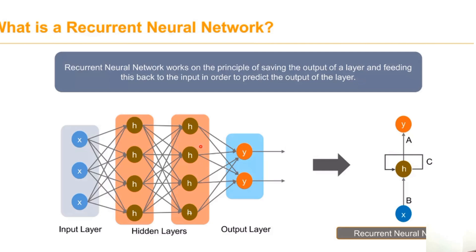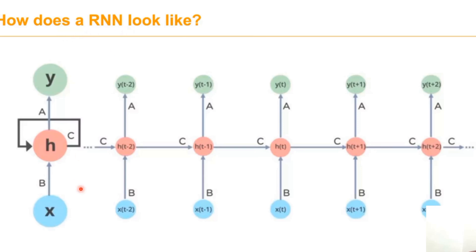This is the architecture of the RNN. It works on the principle of saving the output of a layer and feeding it back to the input to predict the output of the layer. These are the past values, X_t is the present, and these are the future values.